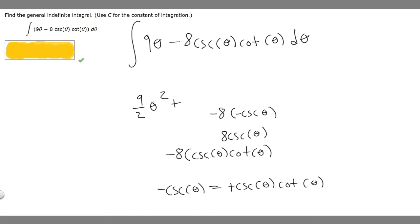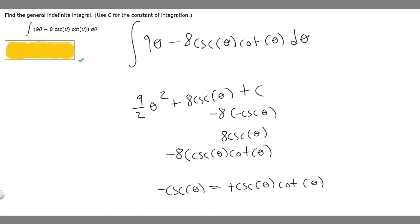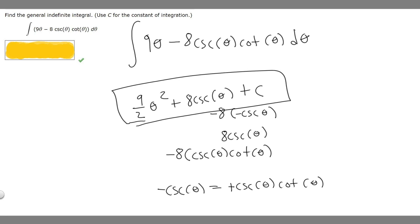We add that on: plus 8 times the cosecant of theta. And since we're taking the antiderivative, we add our constant C at the end. So our final answer is 9 over 2 times theta squared plus 8 times the cosecant of theta plus C.